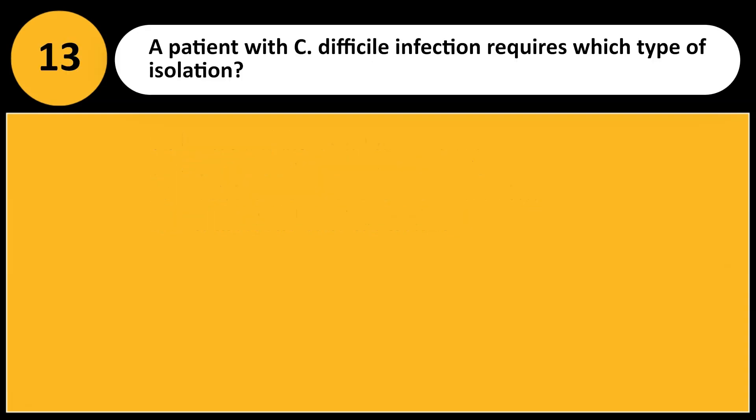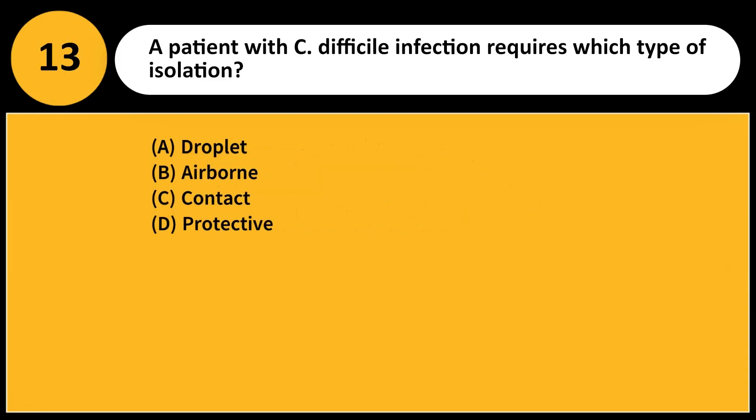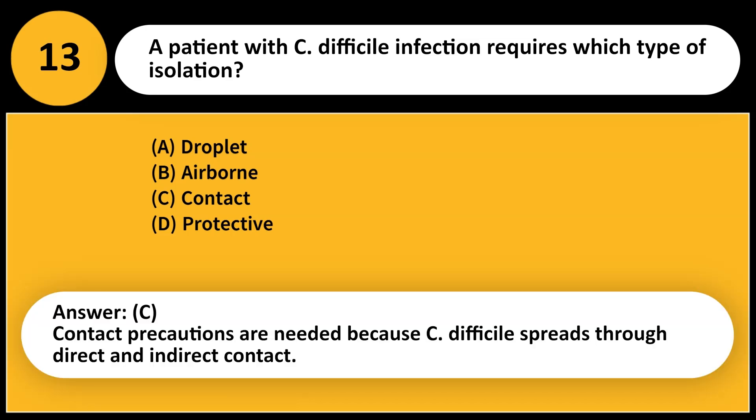A patient with C. difficile infection requires which type of isolation? A. Droplet. B. Airborne. C. Contact. D. Protective. Answer: C. Contact precautions are needed because C. difficile spreads through direct and indirect contact.